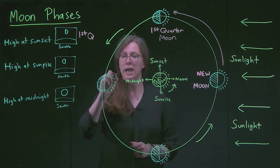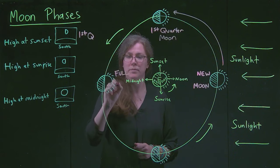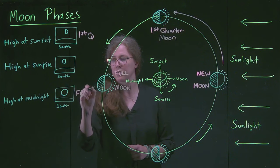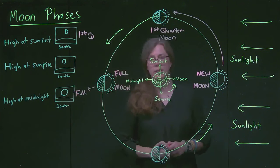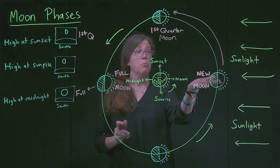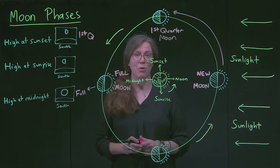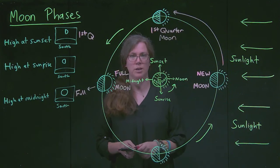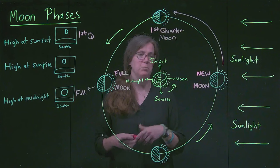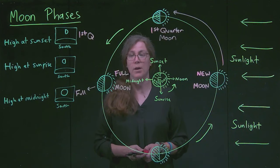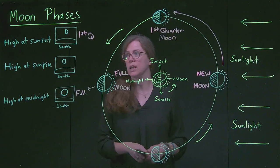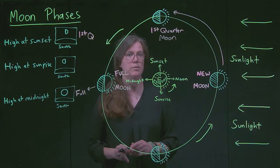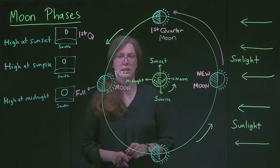Over here we have the full Moon, high at midnight. We could have called it a second quarter Moon or a halftime Moon, but we call it the full Moon — it's what the majority of media tends to portray the Moon as. It's only the full Moon that is really high at midnight. The other examples we've seen show that the Moon rises and sets at different times, and that's something we'll explore more in the lecture videos.